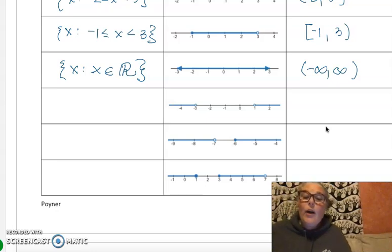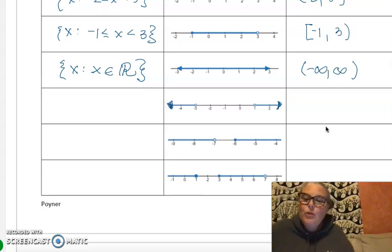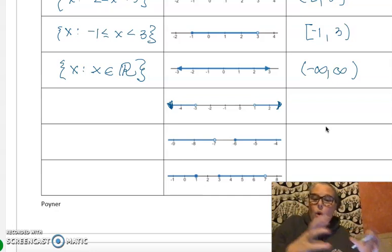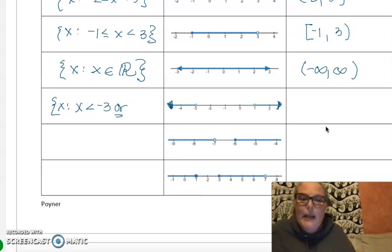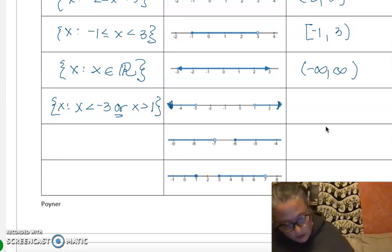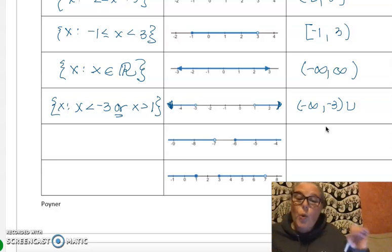When you have two separate parts of a graph, in set builder notation you must use the word 'or.' Do not use a comma and do not use the word 'and' — logically they mean different things. You write: x such that x is less than negative 3, or x is greater than 1. In interval notation, you take the left branch — negative infinity to negative 3, not inclusive — then a union symbol, which is equivalent to 'or' in interval notation.